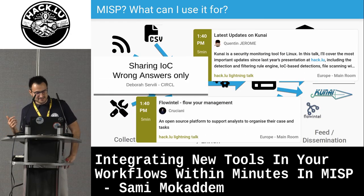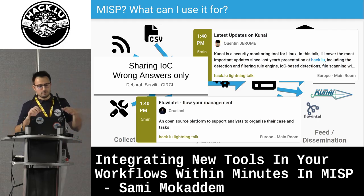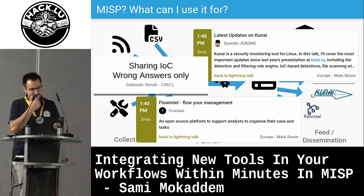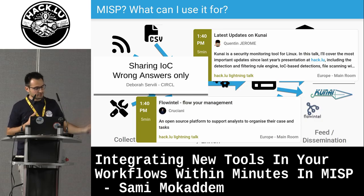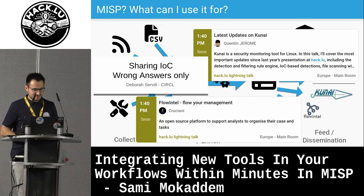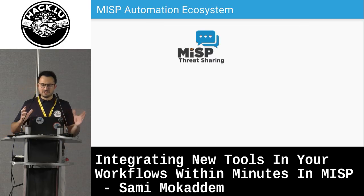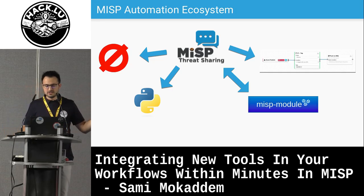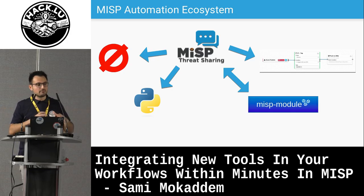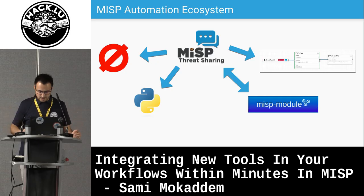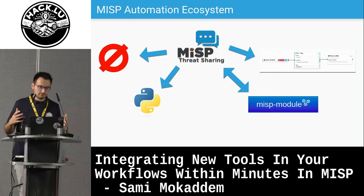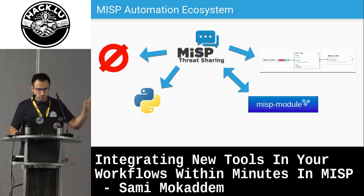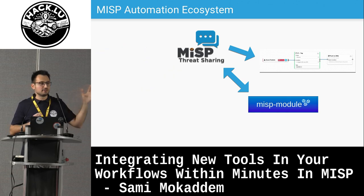A bit more advertising — a few tools on the screen like Kunai and Flowintel; we'll have short lightning talks to explain what they are. This talk is about automating things, so let's have a look at the automation ecosystem in MISP. We have different ways to integrate automation: ZeroMQ, a pub-sub messaging system where MISP sends messages of events happening on the platform; a RESTful API and Python library; and also MISP modules and Workflows — these are the ones we will be focusing on today.